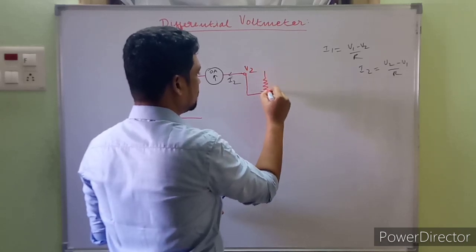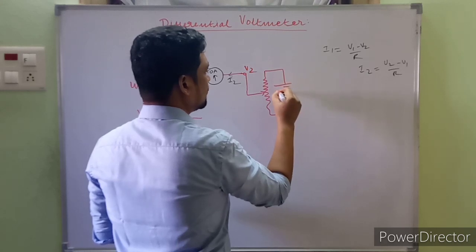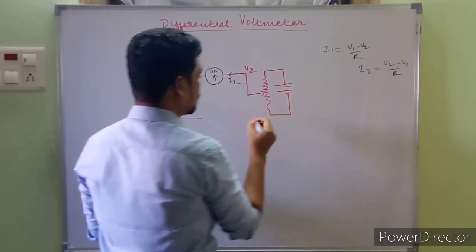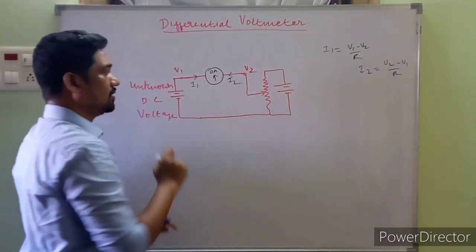A variable potentiometer in conjunction with a standard DC known source. This is known - V2 is known, V1 is unknown.